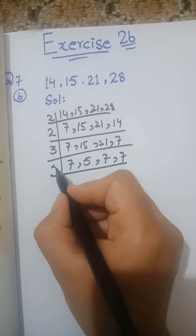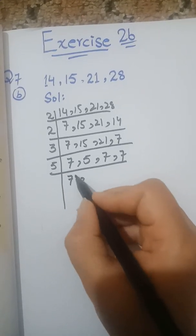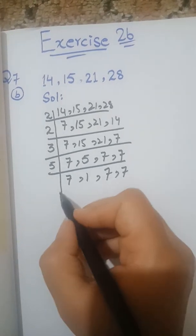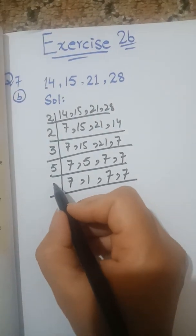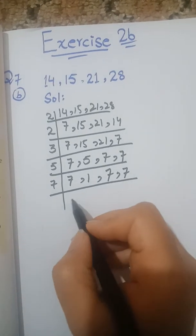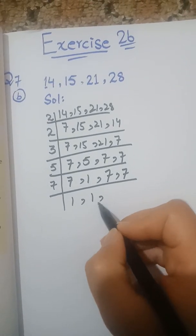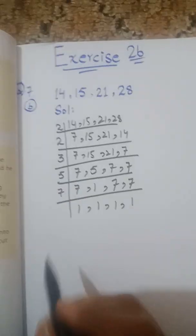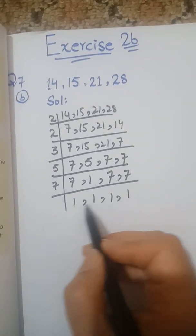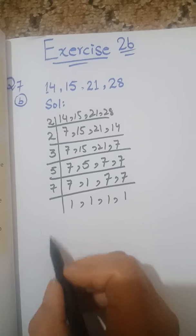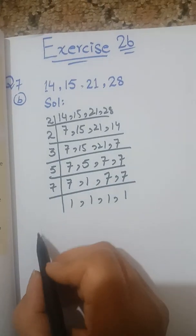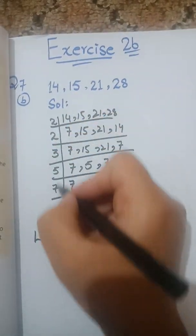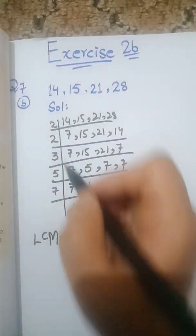Ab 5 ka table lagaayenge — 7 ko as it is utaarenge, 5 × 1 = 5, aur yeh wale 7 aur woh wala 7 as it is utaar denge. Ab 7 ka table lagaayenge: 7 × 1 = 7, 1, 7 × 1 = 7, 7 × 1 = 7. Yahan tak humne completely divide kar diya — hamare paas 1, 1 aa gaya.